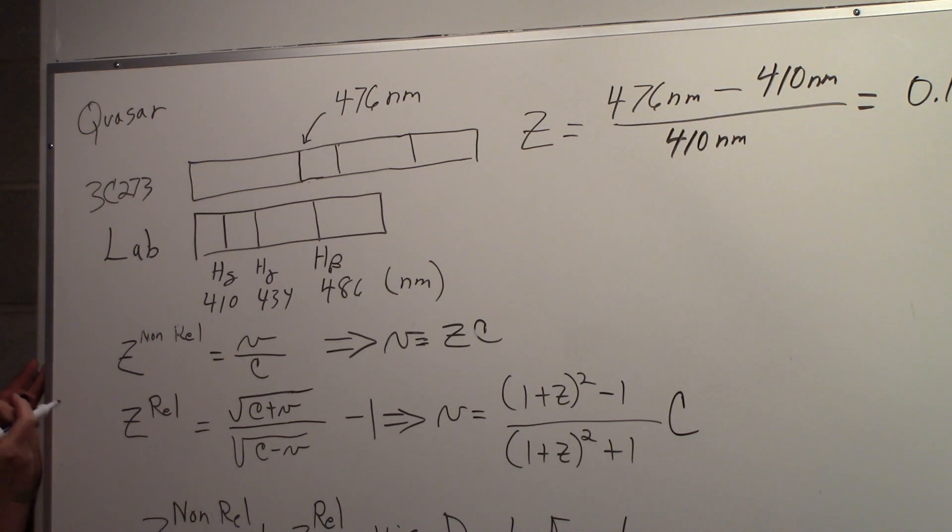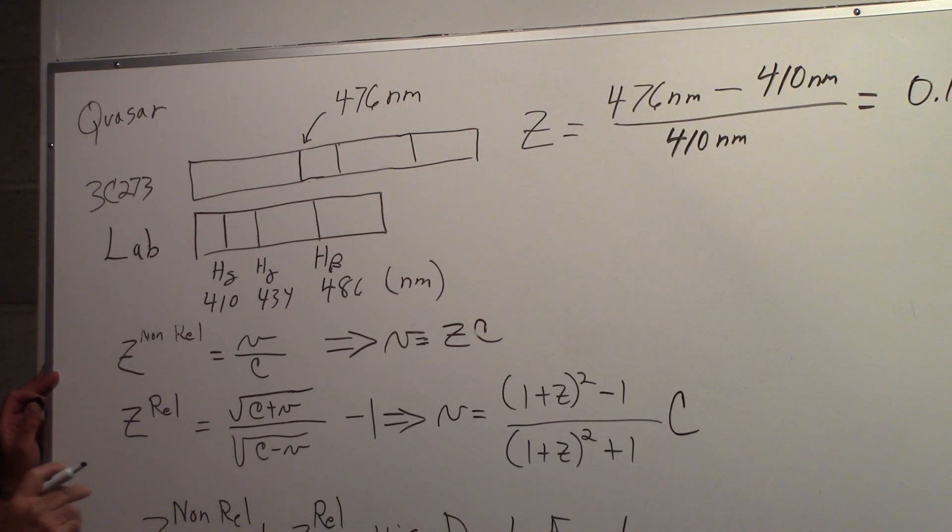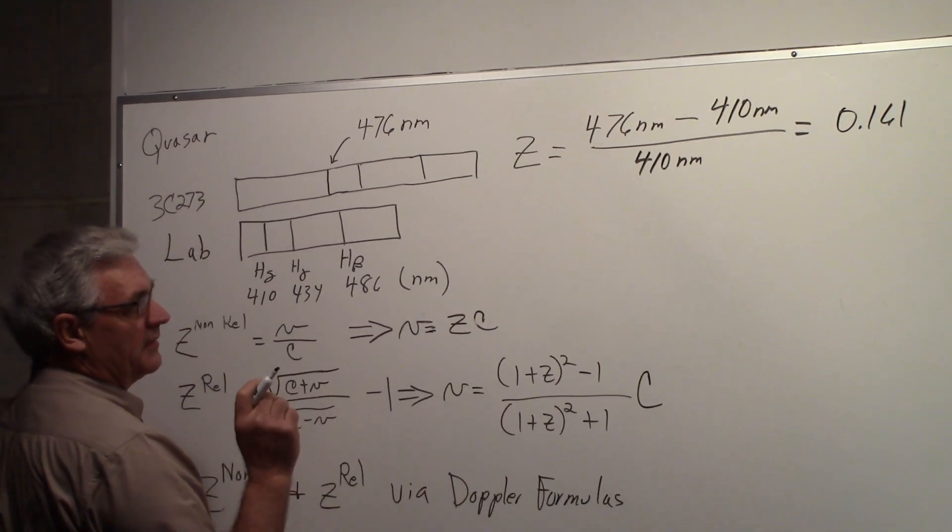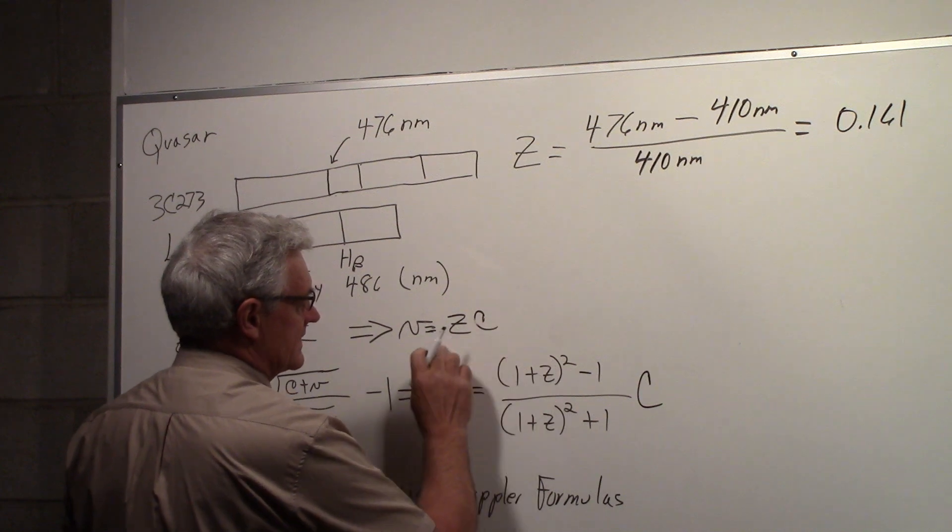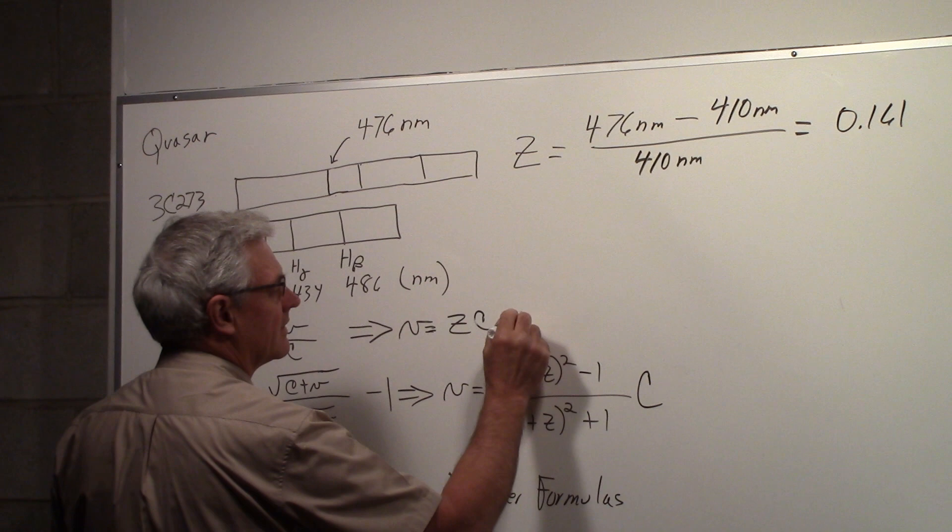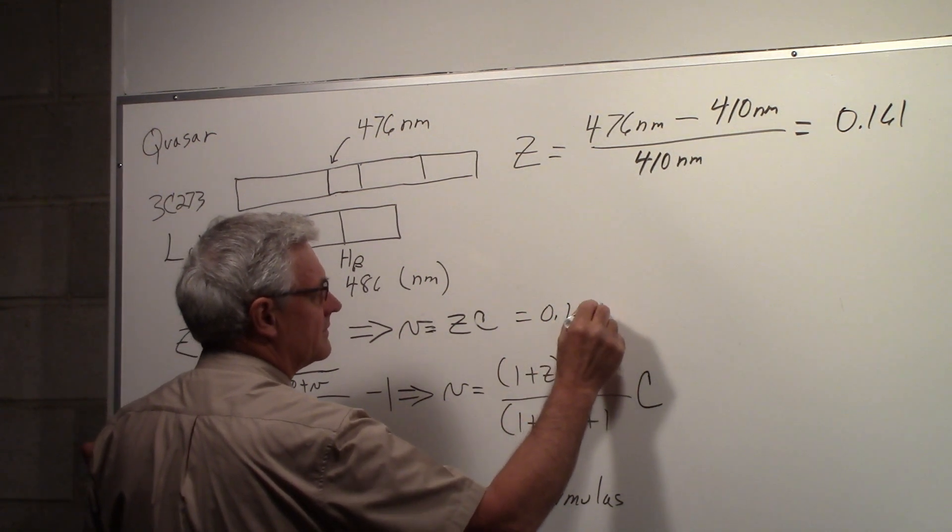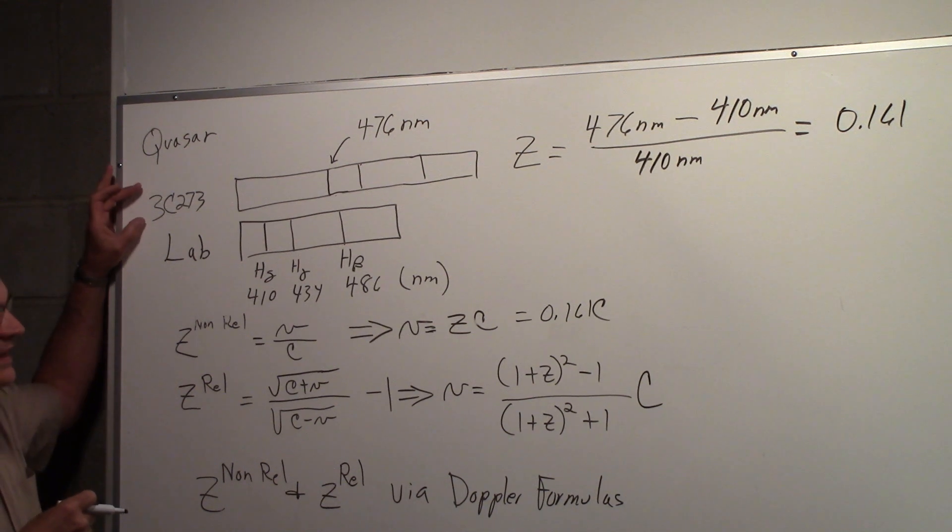So we could say then, if you use the Doppler formula, which is not correct, we could say that with z = 0.161, we could say that the velocity from the non-relativistic formula is simply 0.161c. So if you use the non-relativistic Doppler formula for this quasar, based on that z, it looks like it's moving away at a little over 16% the speed of light.